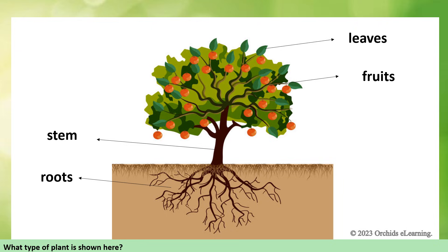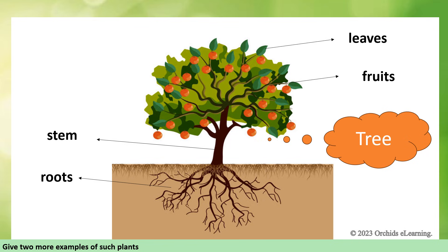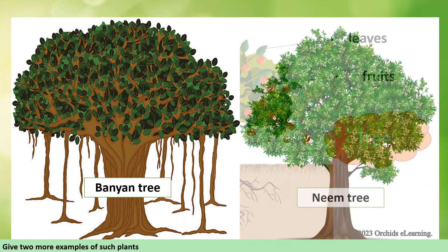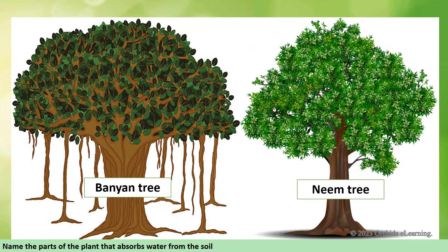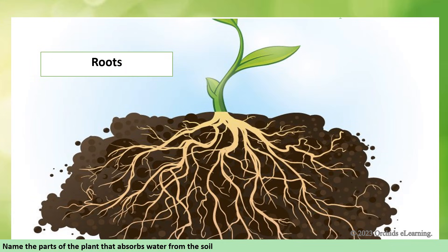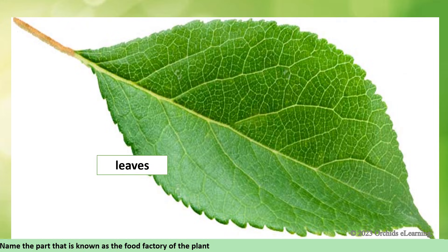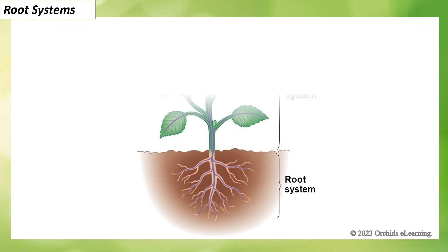Look at the given picture and label the different parts pointed out. Now answer: what type of plant is shown here? Tree. Give two more examples of such plants: banyan tree and neem tree. Name the parts of the plant that absorb water from the soil: roots. Name the part that is known as the food factory of the plant: leaves.